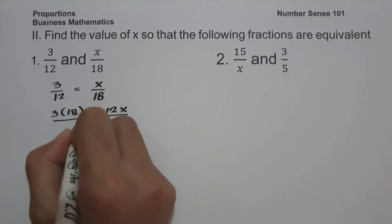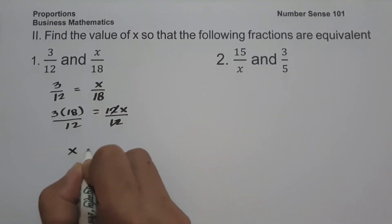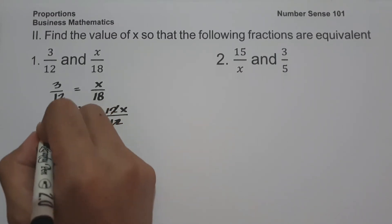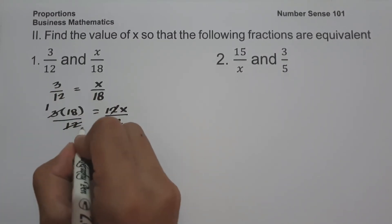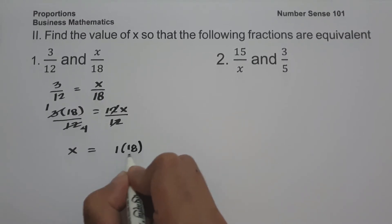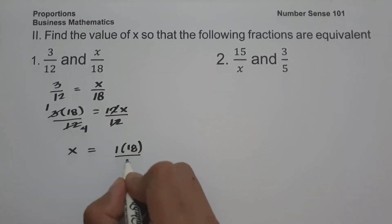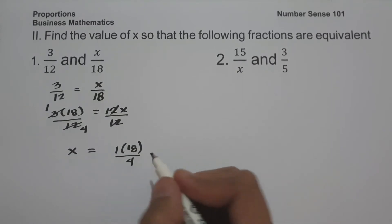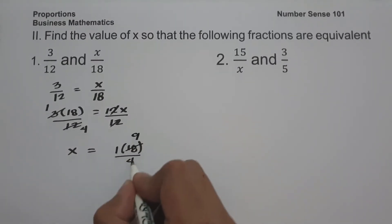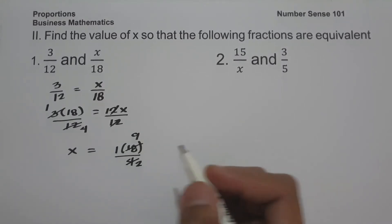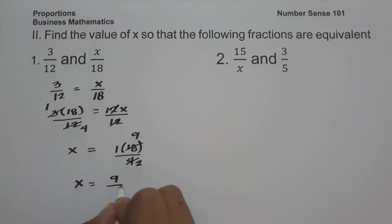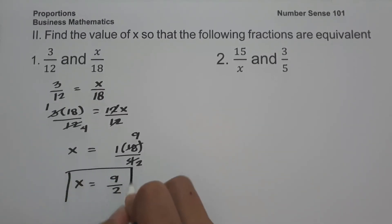After cancelling, since 3 and 12 are both divisible by 3, 3 becomes 1 and 12 becomes 4. Then 18 and 4 are both divisible by 2, so 18 becomes 9 and 4 becomes 2. Therefore x equals 1 times 9 over 2, which is 9 over 2. This is the value of x.